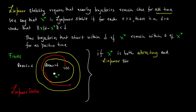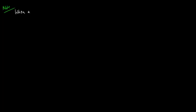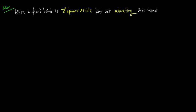This is a visual representation for Lyapunov stability. If x star is both attracting and Lyapunov stable, then the fixed point is asymptotically stable. Note that when a fixed point is Lyapunov stable but not attracting, it is called neutrally stable.